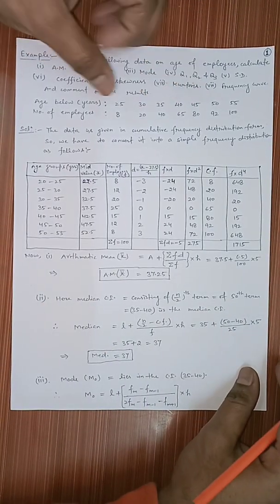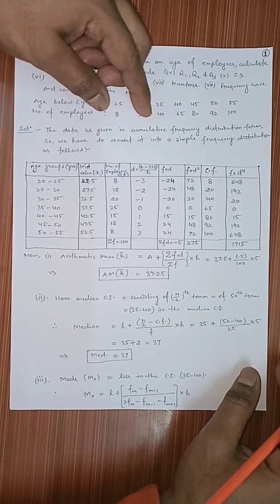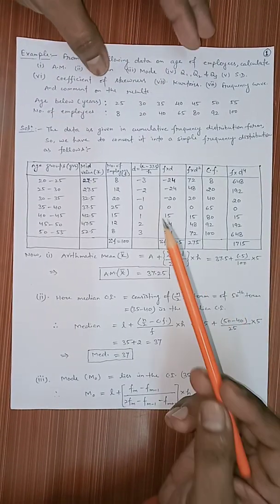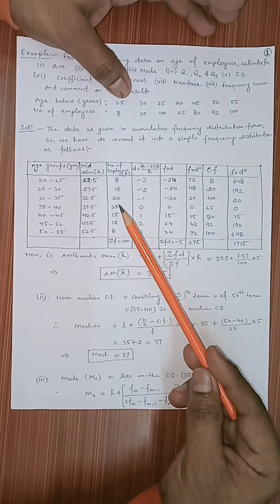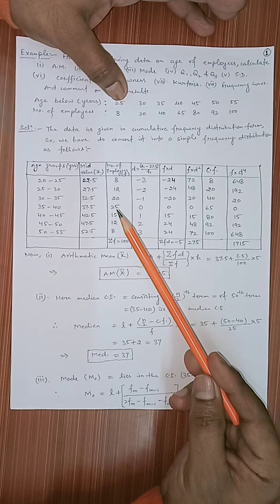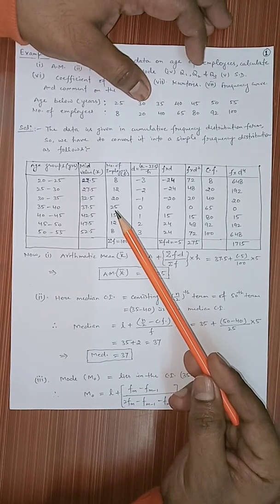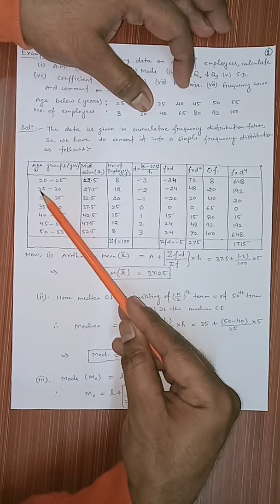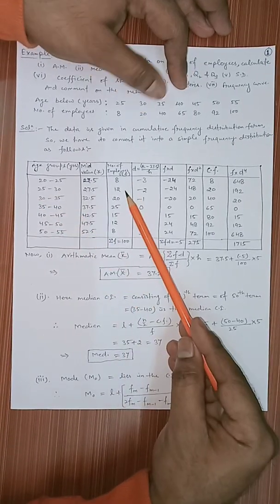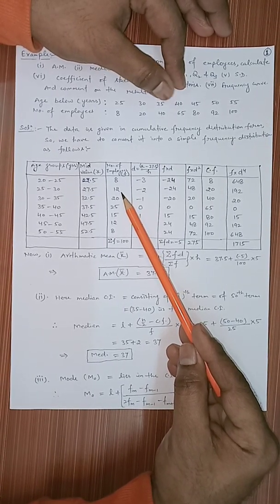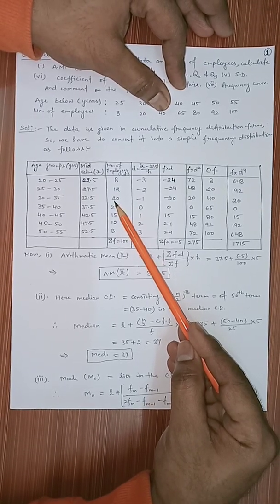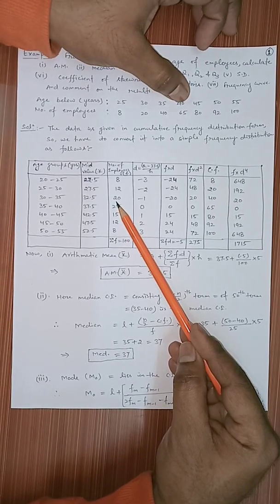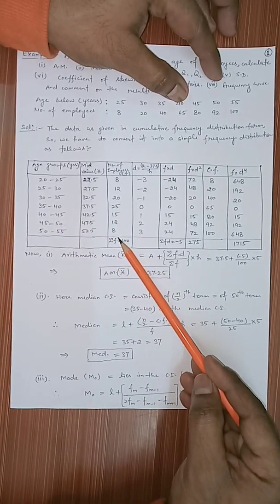The data is given in cumulative frequency distribution form, so we have to convert it into a simple frequency distribution. It is very easy to convert: there are 8 employees with age below 25. For the interval 25 to 30, subtract 8 from 20 to get 12 employees. For 30 to 35, subtract 20 from 40 to get 20. For 35 to 40, subtract 40 from 65 to get 25. In this way we have calculated all the frequencies.